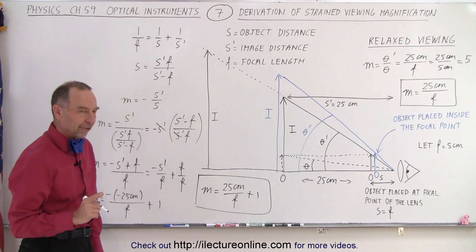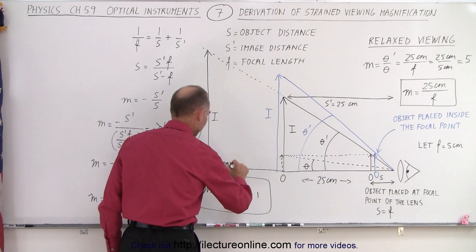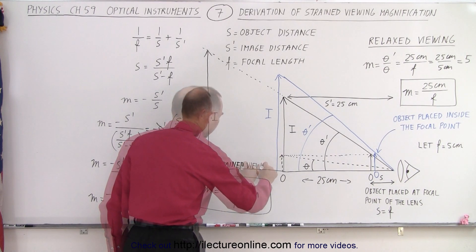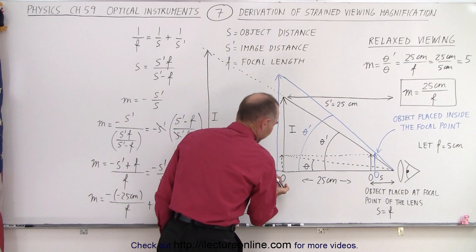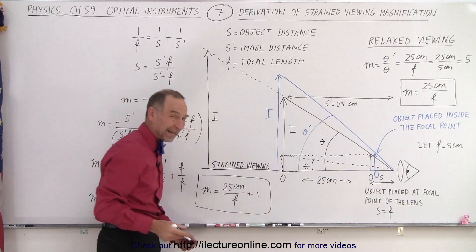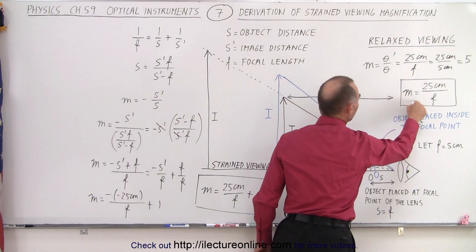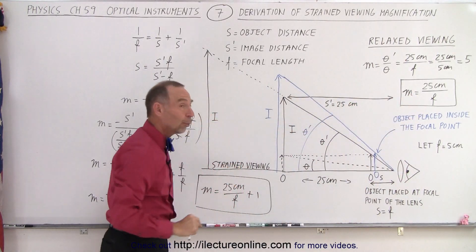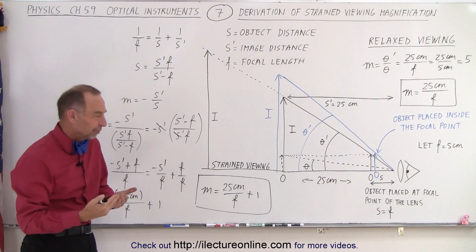Now notice the difference. This is, of course, with strained viewing. Strained viewing means that you force the image to fall to a distance 25 centimeters away at the near point, and this is the equation we use for relaxed viewing. The only difference is plus 1, that means when you use strained viewing, the magnification increases by 1.